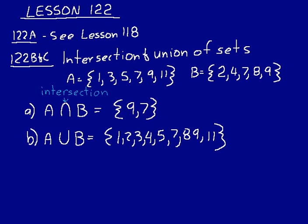You don't write similar numbers twice, so you don't write 7, 7 and 9, 9. All you're doing is saying what numbers do both of those sets have in common.